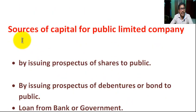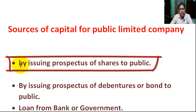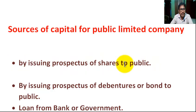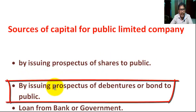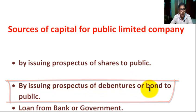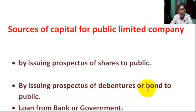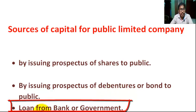Now, what is the source of capital for a public limited company? Number one, by issuing a prospectus of shares to the public — that means issuing a printed document advertising shares to the public. By issuing prospectus of debentures or bonds to the public — debentures or bonds mean a long-term unsecured loan certificate issued by a company, with a fixed rate of interest. Next, a loan from a bank or government.